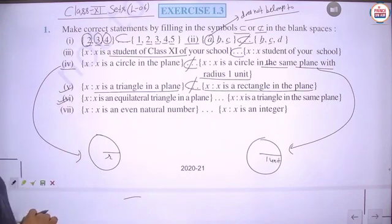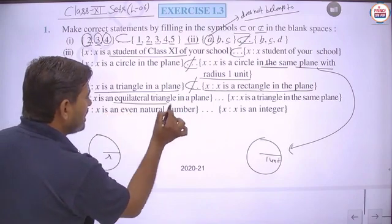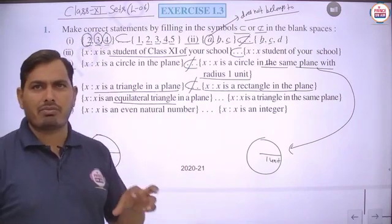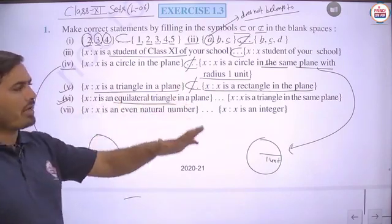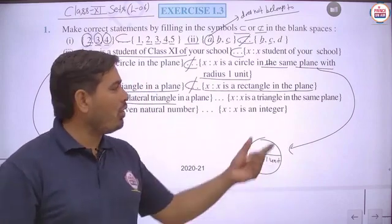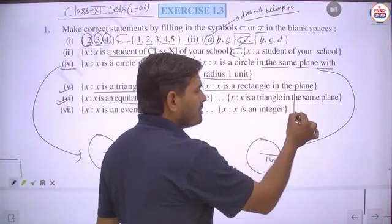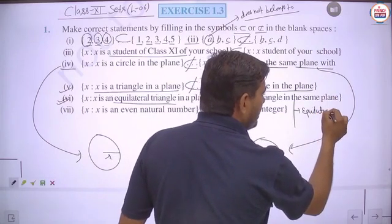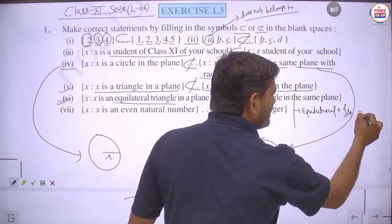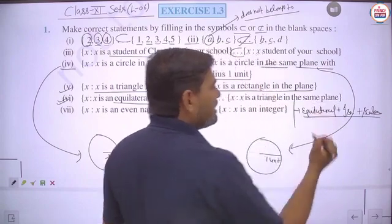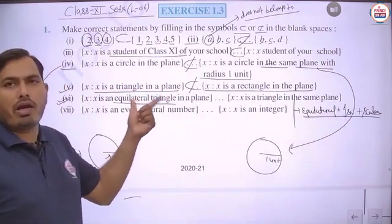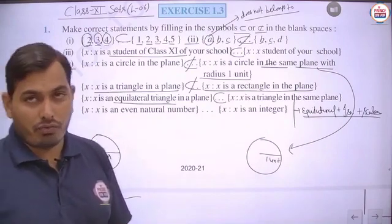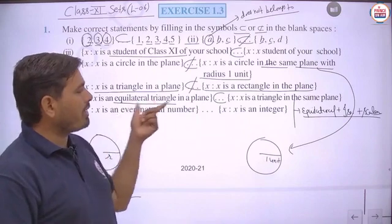Sixth part: X is an equilateral triangle, and the second set contains all triangles in the plane — equilateral, isosceles, and scalene. Since every equilateral triangle is also a triangle, all elements of the first set belong to the second set. So we use the subset symbol.